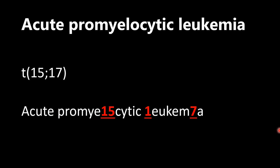Finally, acute promyelocytic leukemia is a translocation between chromosomes 15 and 17. The way I did this: in 'promyelocytic', the 'L' and the 'O' make the 15. And then in 'leukemia', the 'L' is a 1 and the 'I' is a 7 — giving you 17. So acute promyelocytic leukemia is chromosomes 15 and 17.